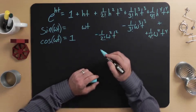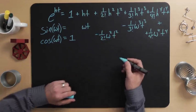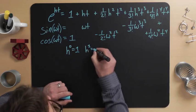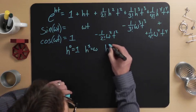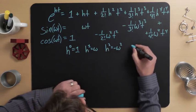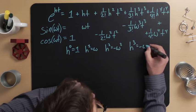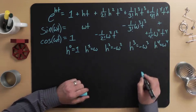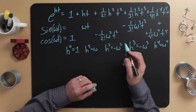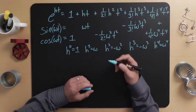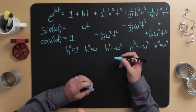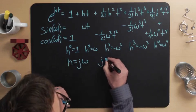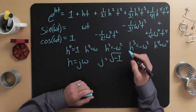You can think of these equations as providing a requirement on h: h to the zero should equal one, h to the one should equal omega, h squared should equal minus omega squared, h cubed should equal minus omega cubed, and h to the fourth should equal positive omega to the fourth. Moreover, we want to keep even powers separate from odd powers. Amazingly, the choice of h equals j omega, where j equals the square root of minus one, does the job.